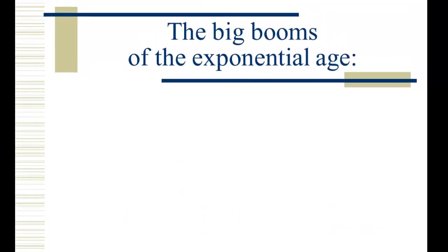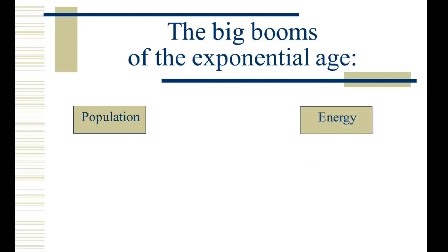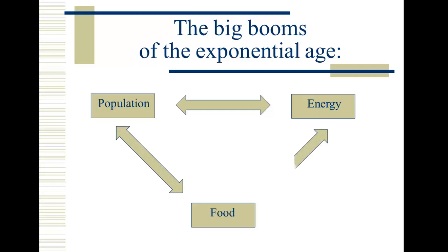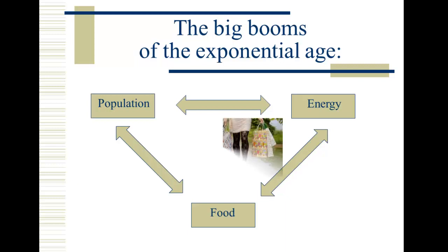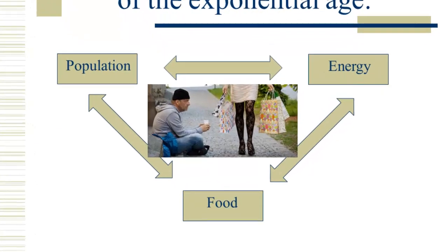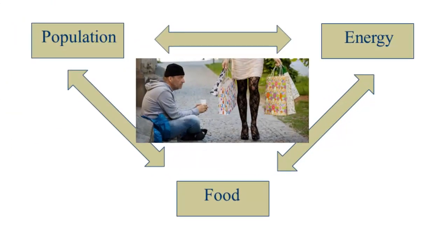So we've looked at three big booms so far of what we're calling the exponential age: the exponential growth of human populations, the exponential growth of human energy consumption, the exponential growth in the production of food. And these, as we'll see, are linked together closely. And now we're going to look at a fourth exponential boom — the growth of social inequality, the gap between the well-to-do and the not-so-well-to-do.